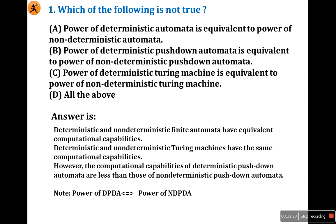Deterministic and non-deterministic finite automata have equivalent computational capacities. Also, deterministic and non-deterministic Turing machines have the same computational capabilities. However, the computational capabilities of deterministic pushdown automata are less than non-deterministic pushdown automata. So the answer for question one is option B.